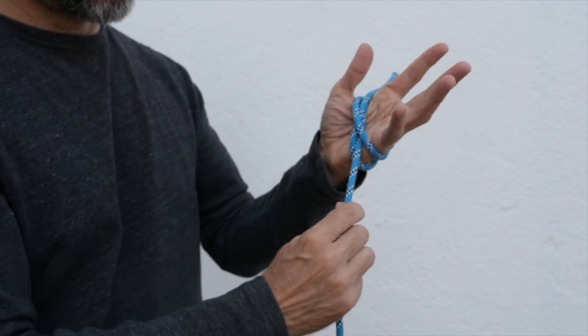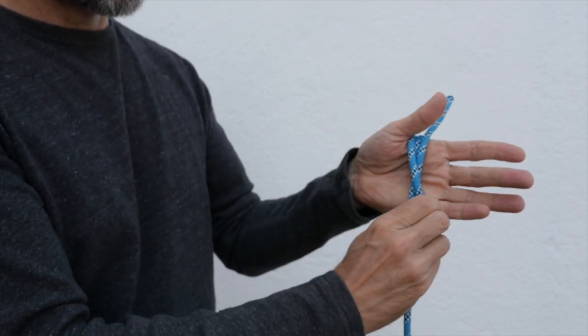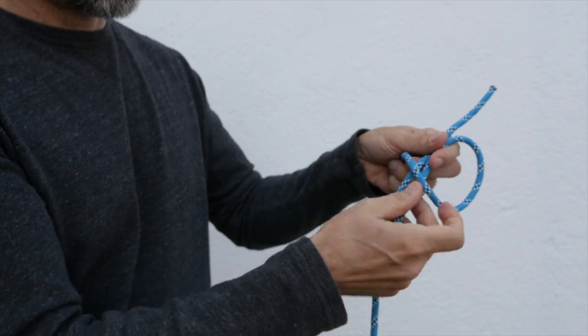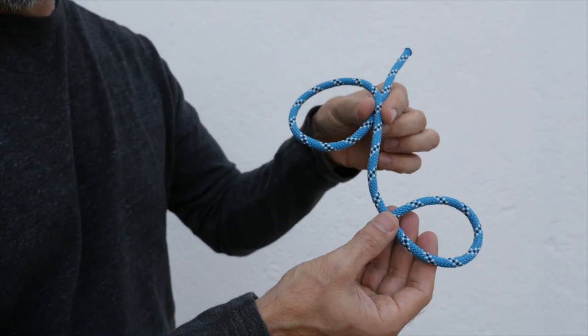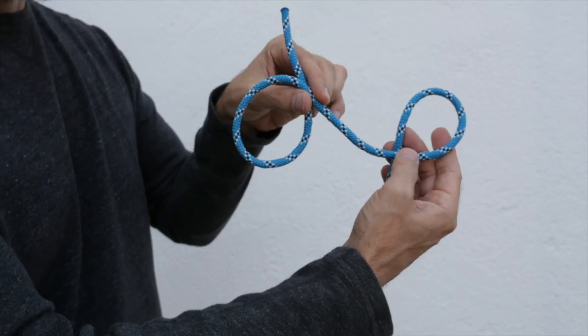I'll bring it back together and take it off my hand so we can have a different look. Now see how we have two loops? We can tie the clove hitch by focusing on those two loops.